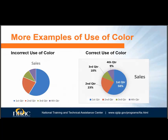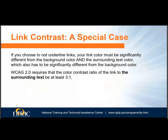Imagine if the chart on the left were printed in grayscale — you'd have trouble figuring out which quarter was which. The chart on the right would be no problem if printed in grayscale. Another example of using color alone to convey information is when links are presented in text without being underlined or having some other non-color designator. WCAG 2.0 requires that the color contrast ratio of the link to the surrounding text be at least 3 to 1.